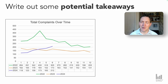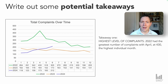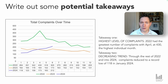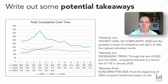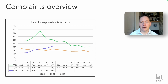You might have some different takeaways to me — that's absolutely fine. But I've highlighted the following three. First, we have a high point of complaints in April 2022 of 430. Then we see a decreasing trend throughout 2022 into 2023 and the beginning of 2024, reducing to a record low of 118 in January 2024. But then from January 2024 onwards, the complaint levels are beginning to rise.